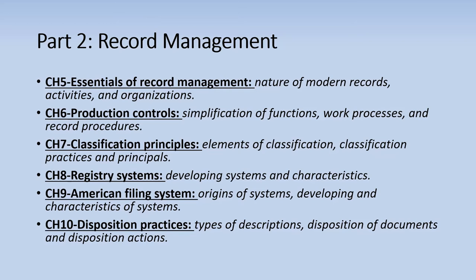Chapter seven indicates the importance of classification and filing for retrieval, noting that records should be arranged in relation to their use and classified to reflect functions. Chapter eight identifies the registry system as one of the earliest forms of record keeping, noting the use of numbers to maintain intellectual control and the use of shelving and filing cabinets. Chapter nine notes how the American filing system differs from the European registry system, and how the American system evolved out of the European one, also discussing the evolution of filing systems.